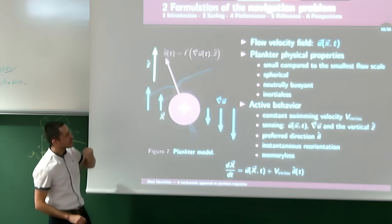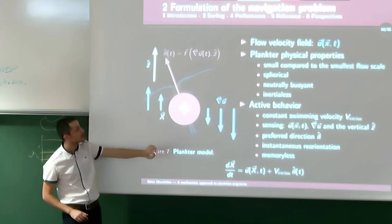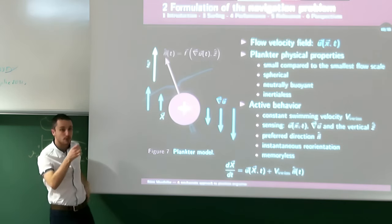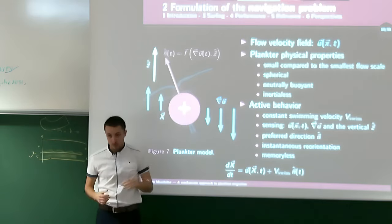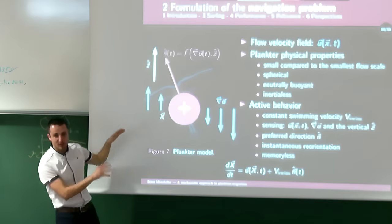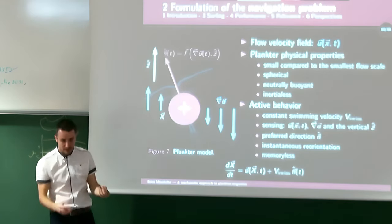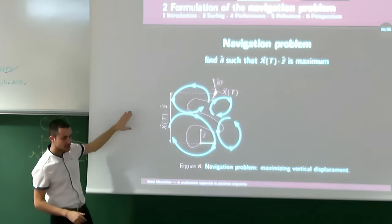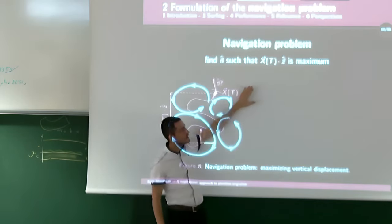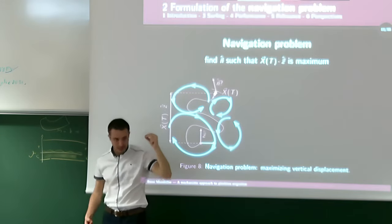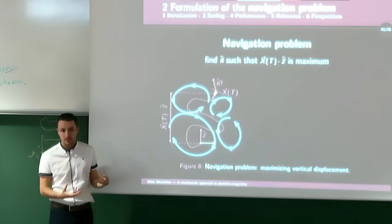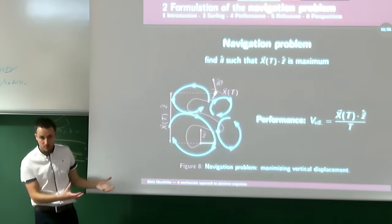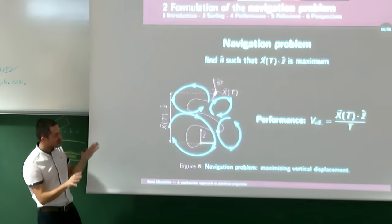We also assume our planktonic organisms are memoryless — they choose their preferred swimming direction at any point in time only as a function of the current measure of the flow velocity gradient and the target direction d. The navigation problem is then stated simply: find the optimal preferred swimming direction n such that vertical displacement is maximized. To assess performance, we use the effective migration velocity.